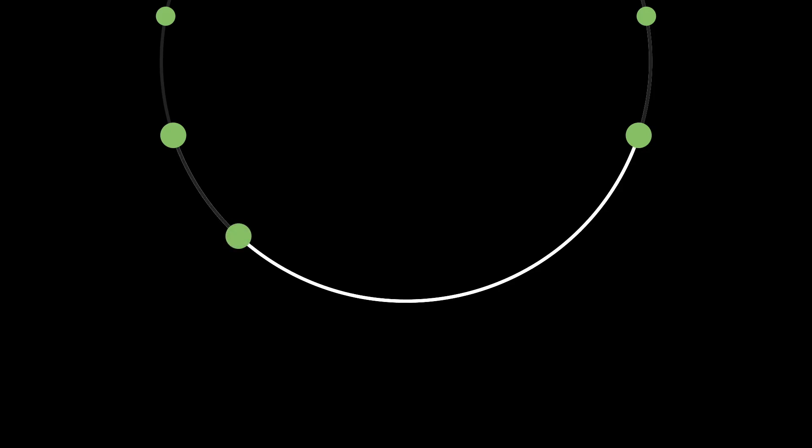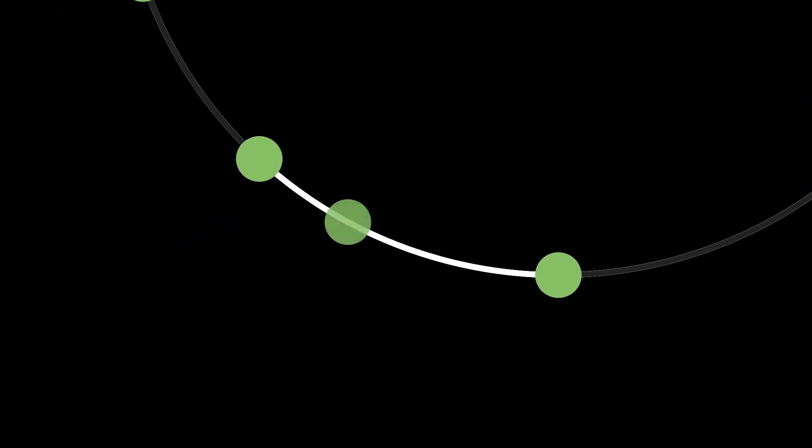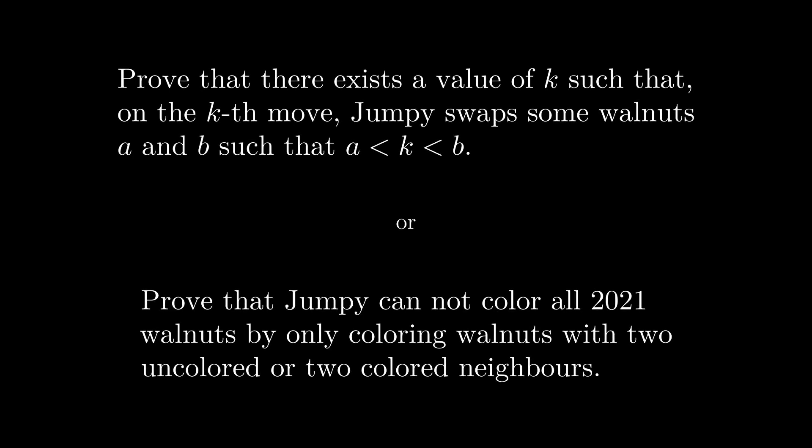And now we just iterate this process and it always yields smaller and smaller non-empty arcs of even length. And we can continue to do this until we cannot go any further. And that is when we get to an arc of length 2. When Jumpy gets to this arc of length 2, Jumpy cannot color either one of these final two white nuts without coloring one nut with one white and one green neighbor. It's exactly this nut K with neighbors A and B where A is smaller than K and B is larger than K. And this is what the problem was to find. And now that is what we've shown. So now we have solved a problem that appeared on the International Mathematics Olympiad this year.